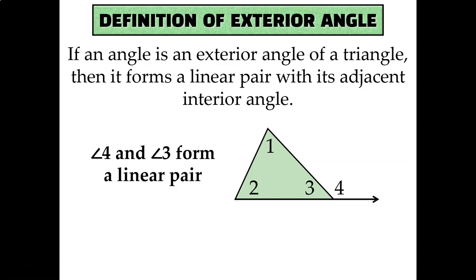In other words, angle 3 and angle 4 are a linear pair. And that's cool and all, but there's actually more to exterior angles than that. To figure out what else they have to offer, let's write a proof.